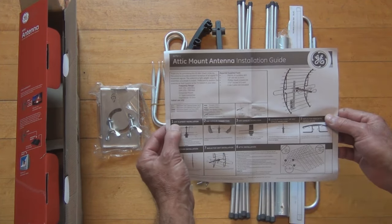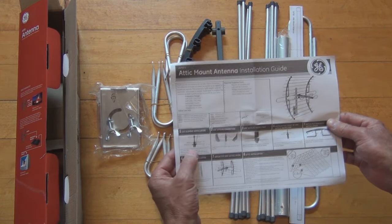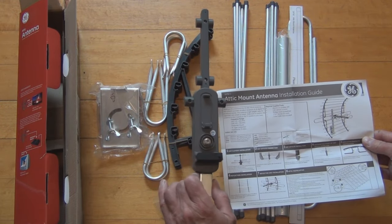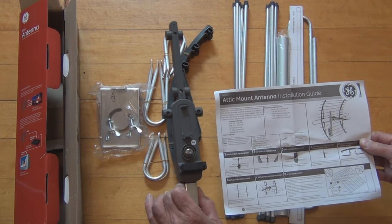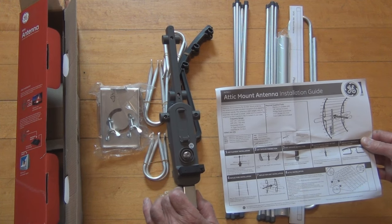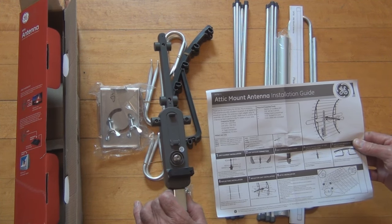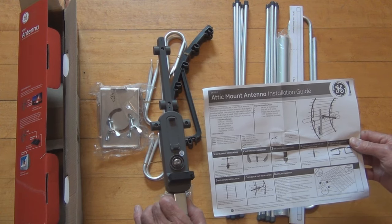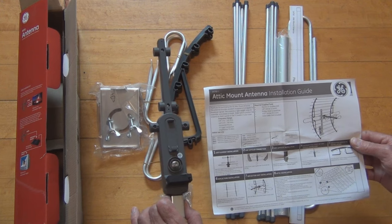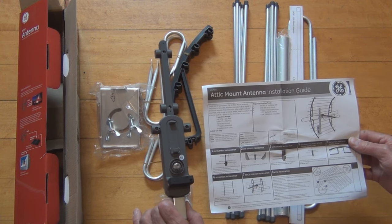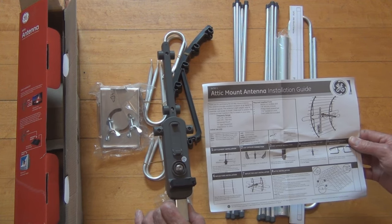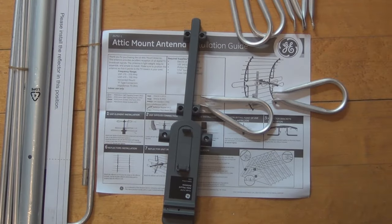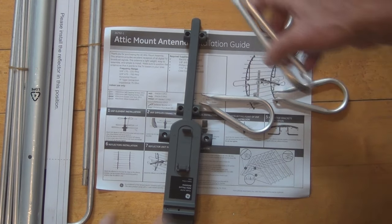So I'll just go by the pictures. The first thing you do is you put the UHF elements together which go on here. I do need a cordless drill, a 1/8th drill bit, Phillips head screwdriver, a 7/32nds socket or 5.5 millimeters, and coax cable not included. The first thing I need to install looks like they're calling these dipoles.